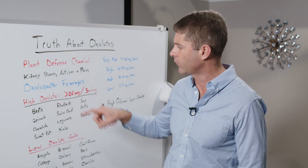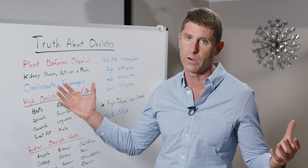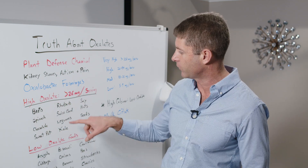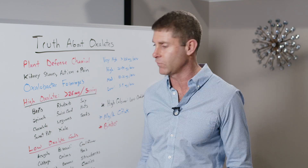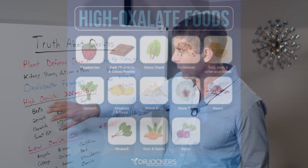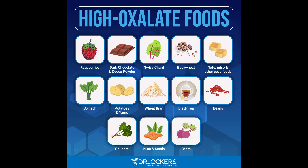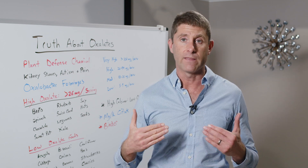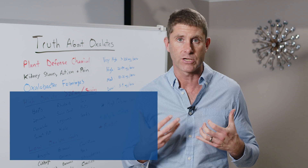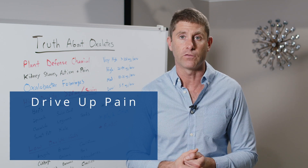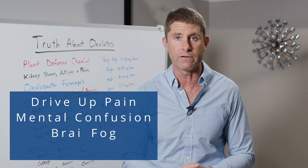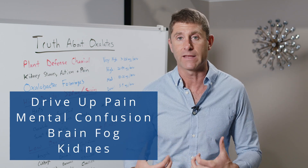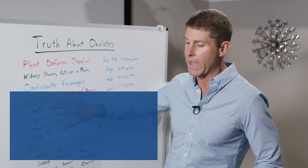The high oxalate foods include beets, spinach, chocolate, sweet potatoes, rhubarb, Swiss chard, legumes, kale, soy, nuts, and seeds. For someone on a plant-based diet, these are all nutrient-dense foods — but if they're not metabolizing the oxalates, oxalates will actually bind to magnesium and calcium, so you won't absorb those nutrients as effectively. Oxalates can also drive up pain in the body, cause mental confusion and brain fog, and of course lead to kidney stones and related issues.